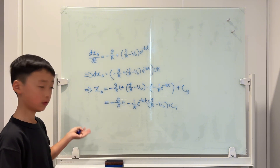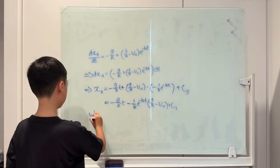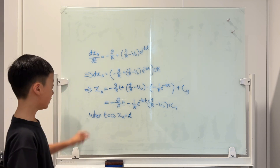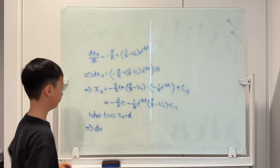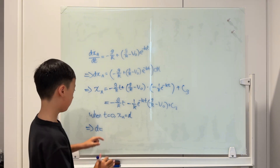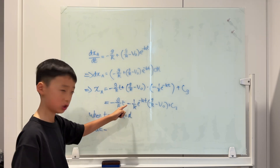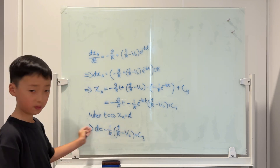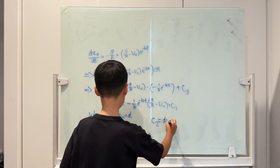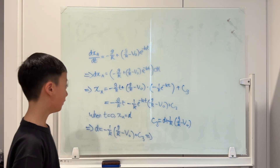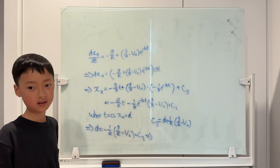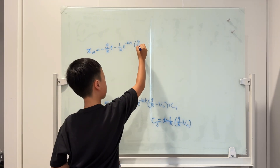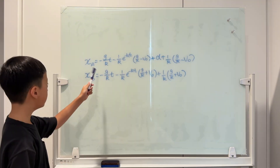Substituting t equals 0 and XA equals D: the t terms vanish and we get D equals negative (G over K minus V0) over K times 1 plus C3. So C3 equals D plus (G over K minus V0) over K. We can now plug C3 back in to get the full expression for XA. Similarly, XB is found by the same method with B's initial conditions.